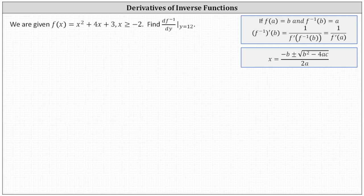We're given f of x equals x squared plus 4x plus 3, where x is greater than or equal to negative two. We have this domain restriction to make sure that f of x is one-to-one and has an inverse function. We're asked to find df inverse dy at y equals 12.